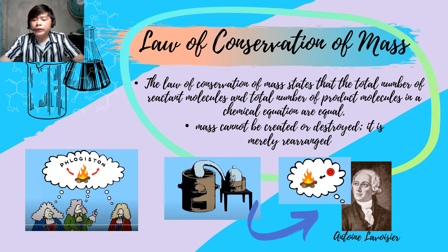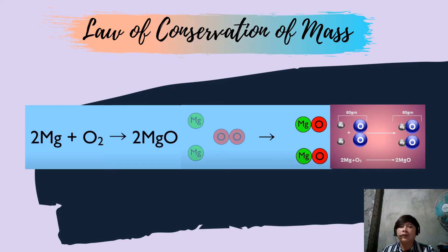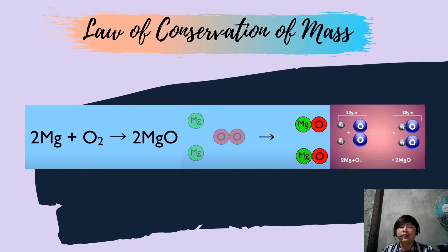In chemical reactions, no matter is lost or gained. The significance of the law of conservation of mass is seen when we balance an equation — we are simply obeying this law. All the atoms in reactants must be accounted for in the products, so the total number of reactants is equal to the total number of products. For example, magnesium plus oxygen combine to form magnesium oxide. The atoms are simply rearranging themselves, meaning there is no loss or gain of atoms during the reaction.